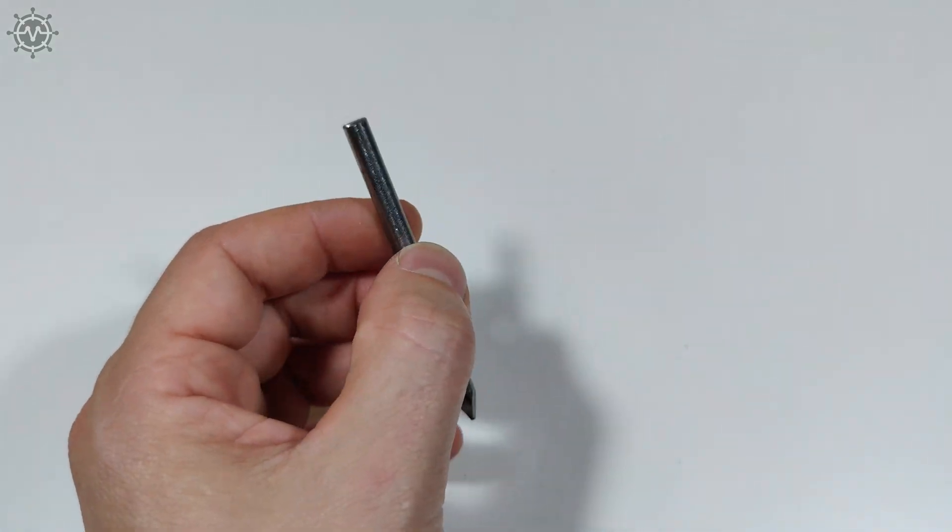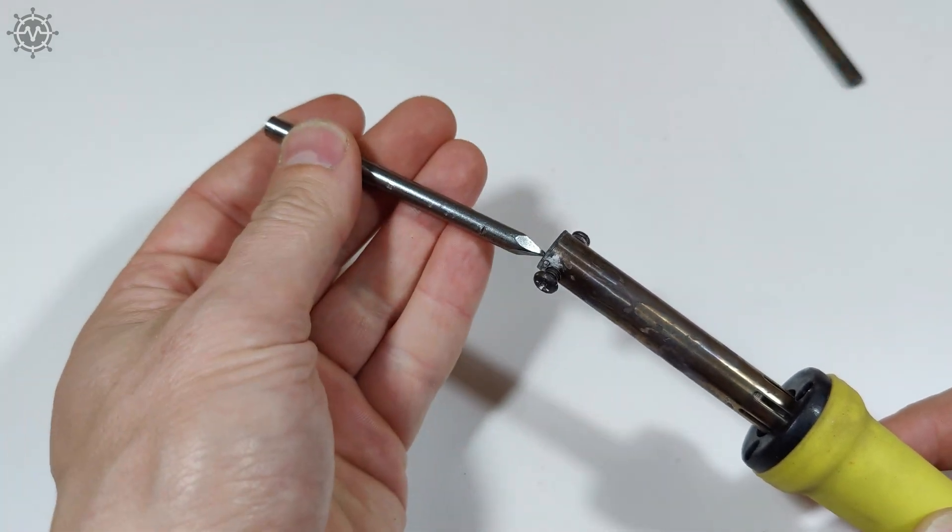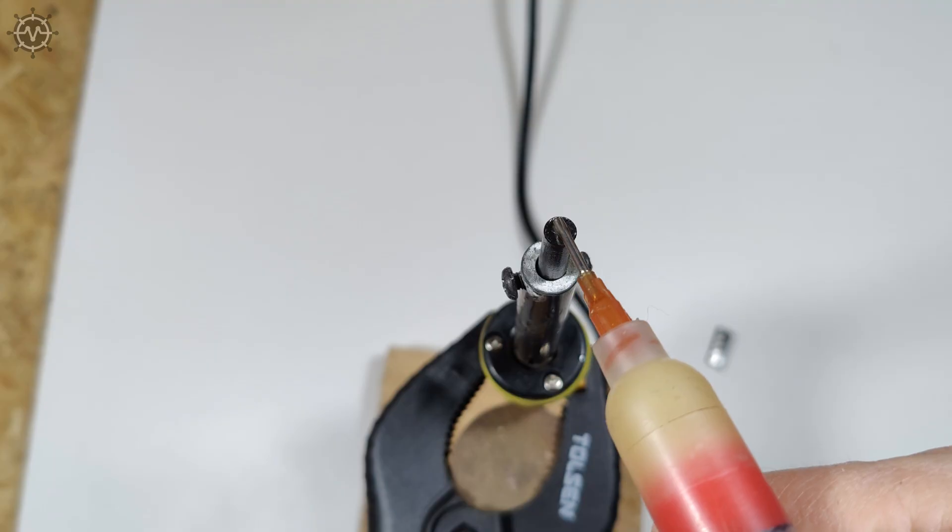First, I cut a nail of the appropriate diameter and replaced it with a standard soldering iron tip, with the flat end facing up. I fixed the soldering iron in a vertical position and applied solder paste for better contact.